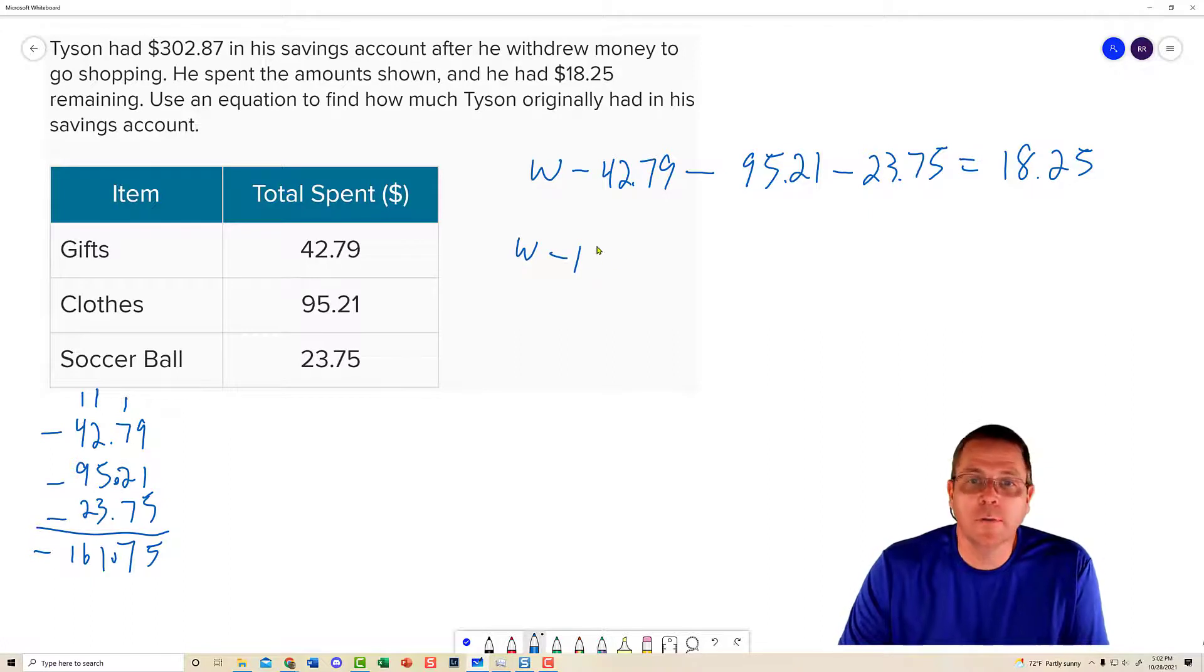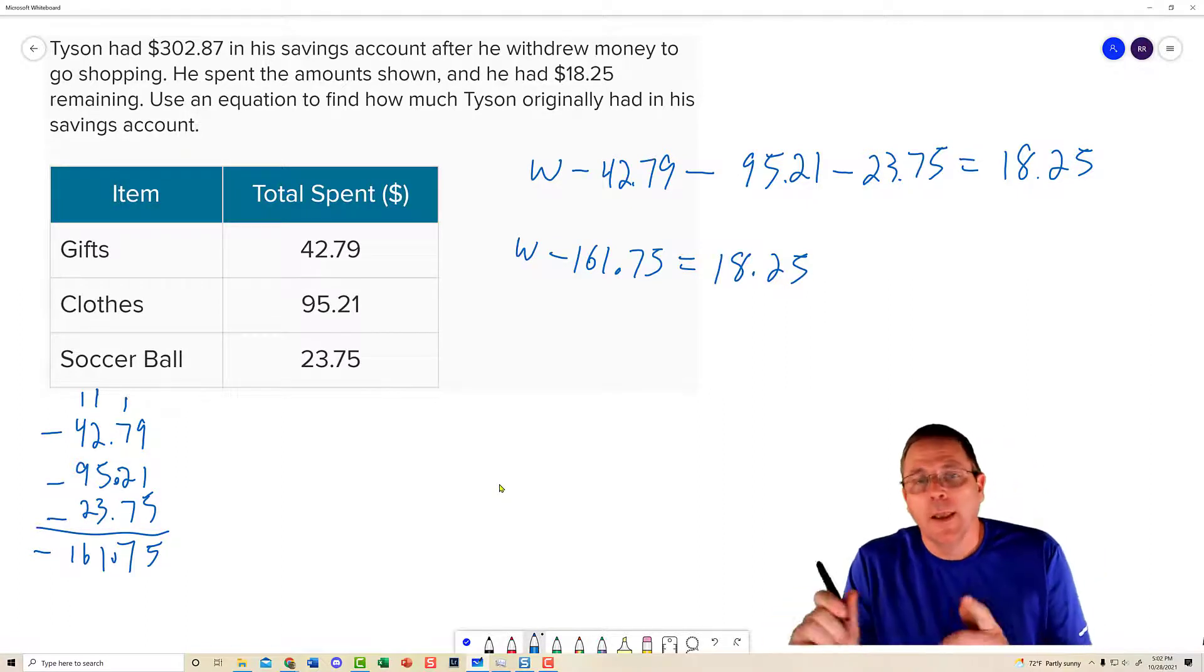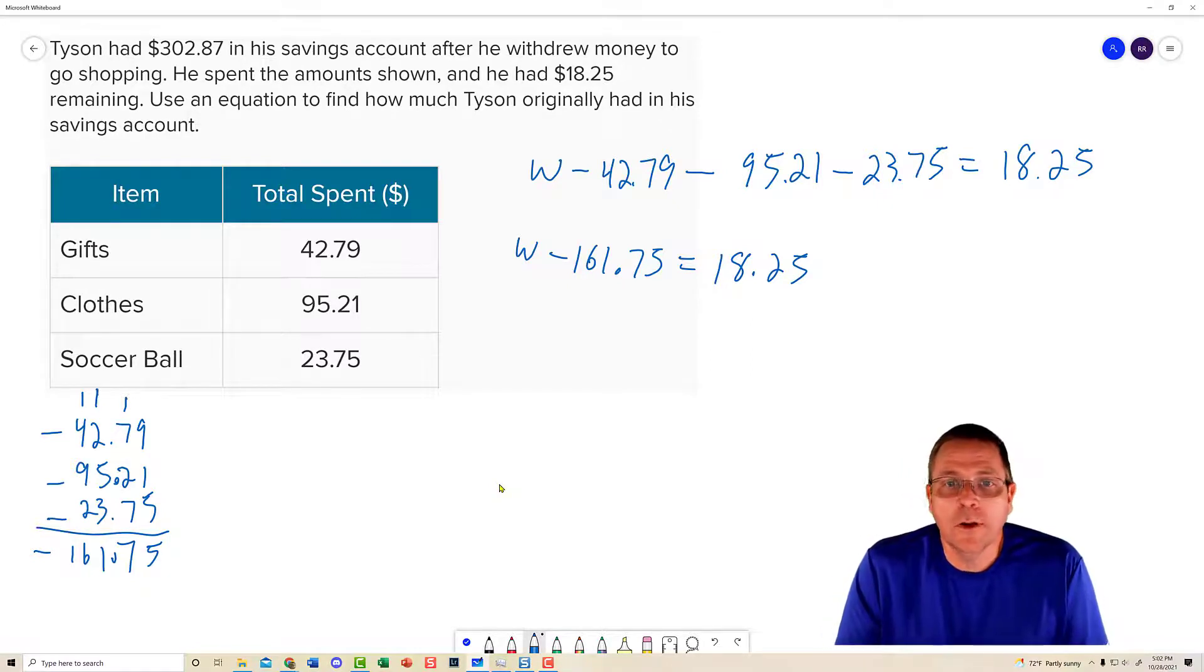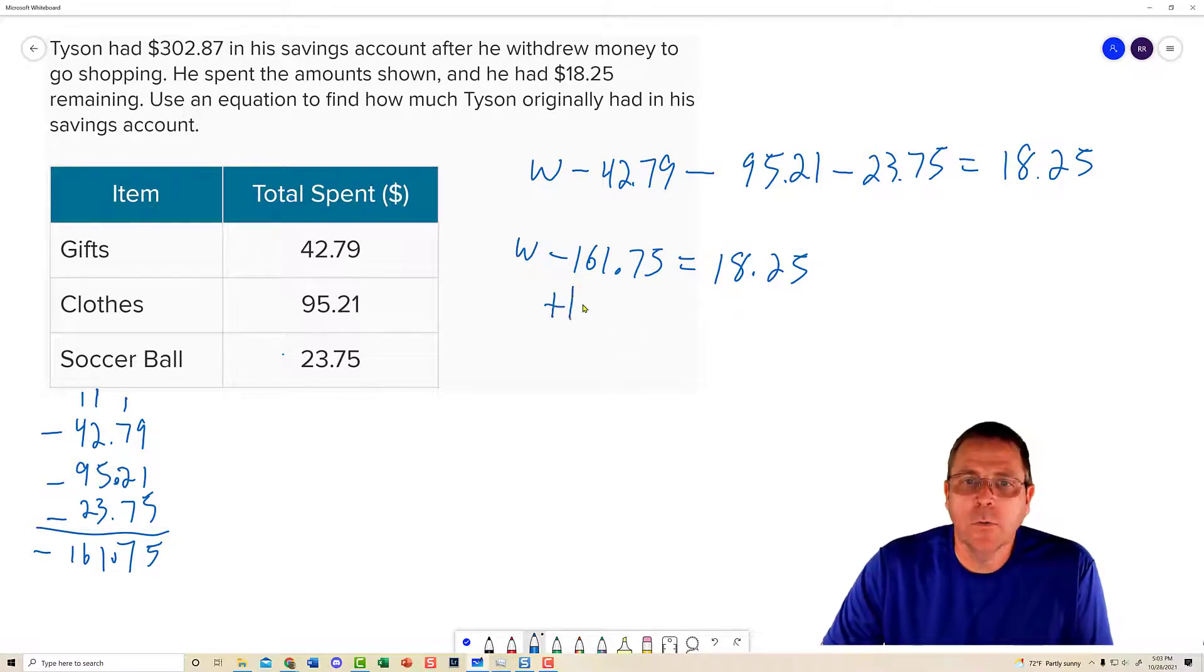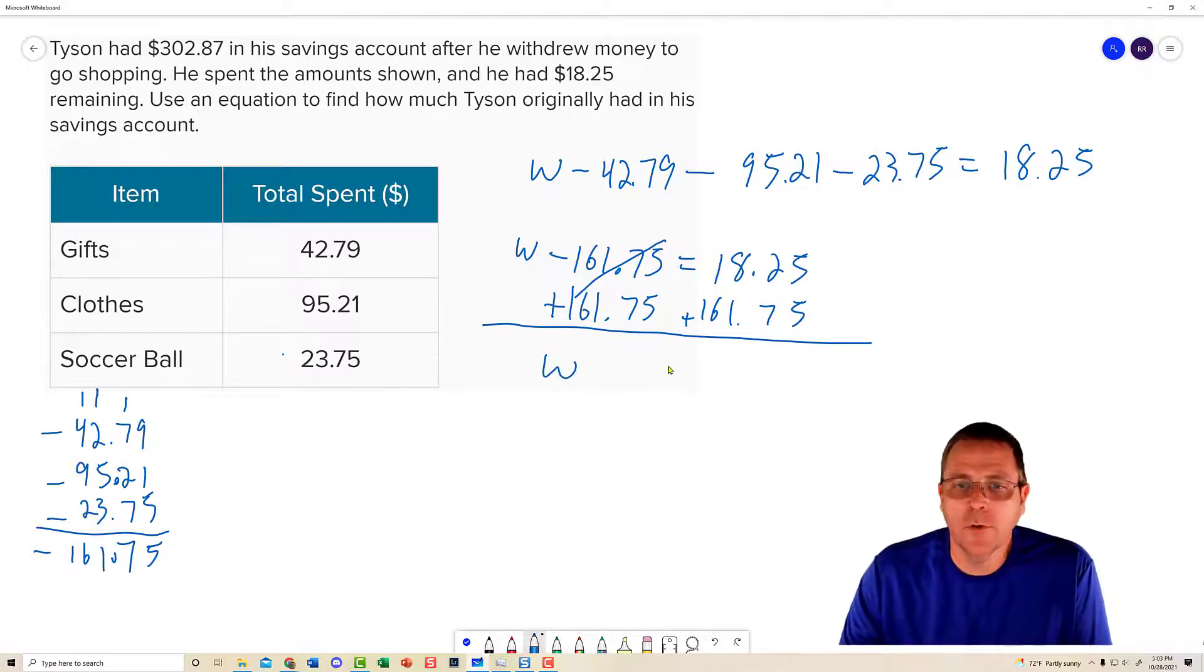So he had $161.75 that he spent. So W minus $161.75. Not 16. 75 cents. And that ended up equaling $18.25. Now we get to use the addition property of inequality to isolate the variable. All right. To do that, I'm going to take and add the friend $161.75 to both sides.